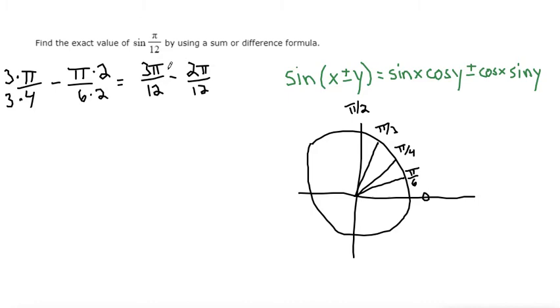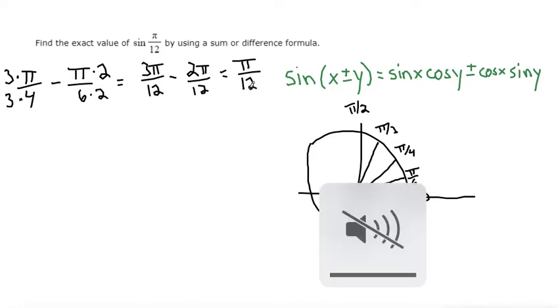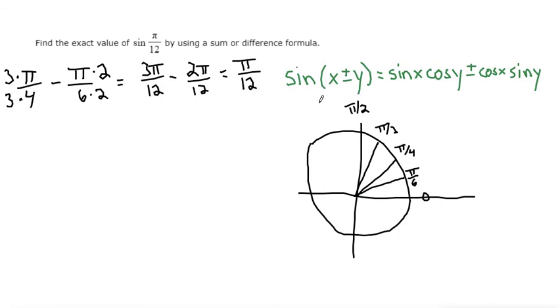Which if we subtract three pi minus two pi makes one pi, or just pi, and the denominator stays the same. So that would be 12. So look at that, we just got pi over 12 by using pi over four minus pi over six.